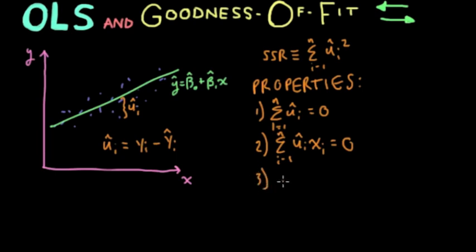The third property is the mean of y, so y bar is equal to beta zero hat plus beta one hat times the mean of x. So this one might look a little bit more intimidating at first, but it's essentially very simple.